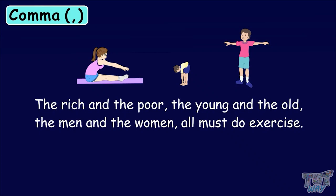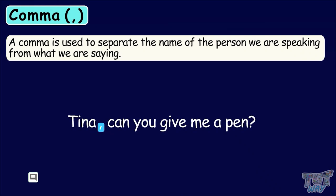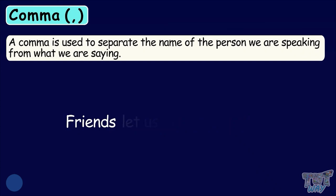A comma is used to separate the name of the person we are speaking from what we are saying. Tina, can you give me a pen? So we give a pause after the noun Tina. Friends, let us start our work. Here also we give a pause between friends and the rest of the statement.